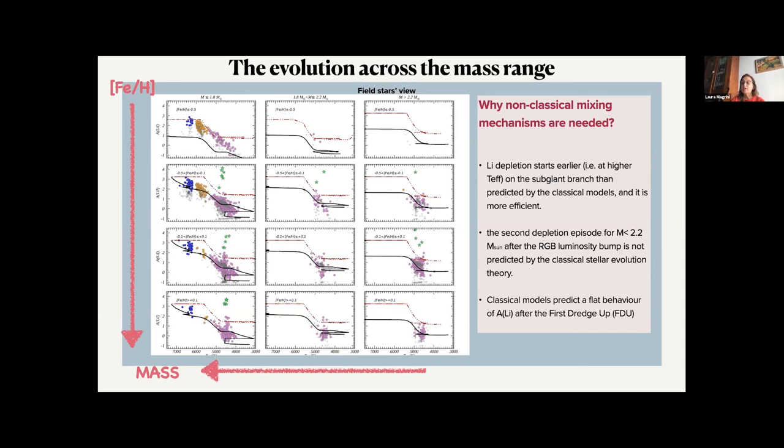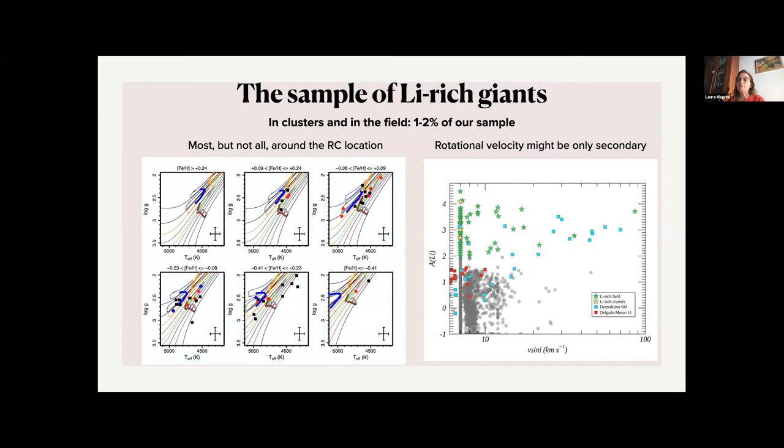You can see that we have a number of giants which are lithium enriched. We have tried to see which is the correlation with evolutionary phases, so with the projected rotational velocity of the stars.